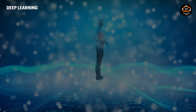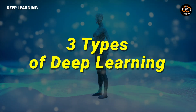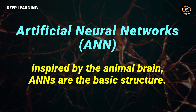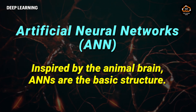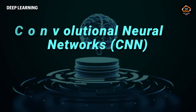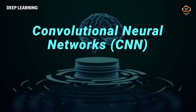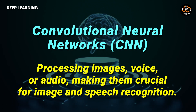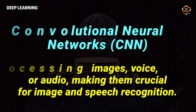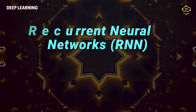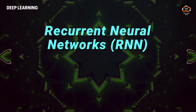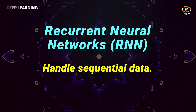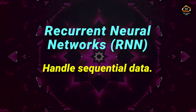Now let's explore the different types of deep learning. Artificial neural networks, inspired by the animal brain, are the basic structure. Convolutional neural networks, or CNN, excel in processing images, voice, or audio, making them crucial for image and speech recognition. Recurrent neural networks, or RNN, are designed to handle sequential data and are used in natural language processing and other tasks involving time series data.